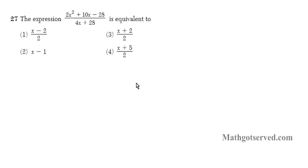It says the expression 2x squared plus 10x minus 28 over 4x plus 28 is equivalent to. So let's extract the numerator and denominator, simplify them as much as possible. And then it will be easy for us to cancel out the common factors. So let's extract the numerator first and factor that completely.